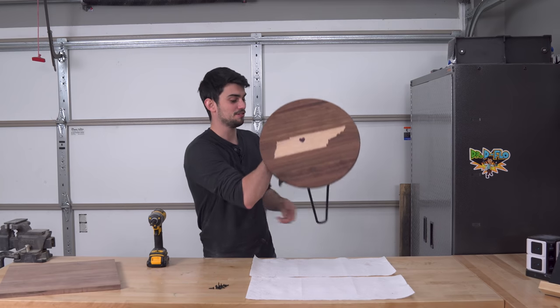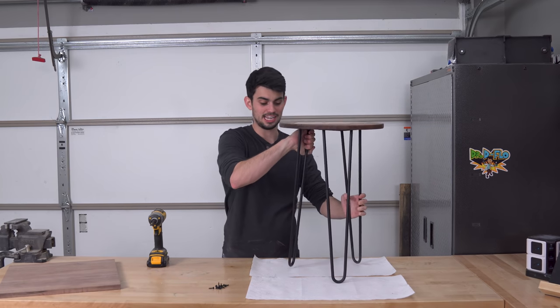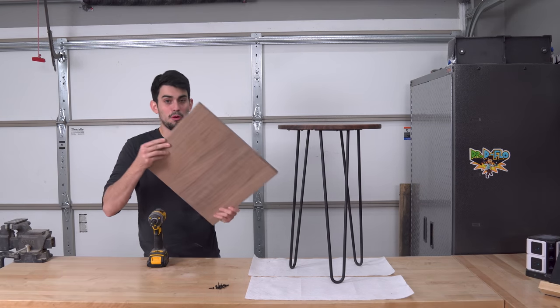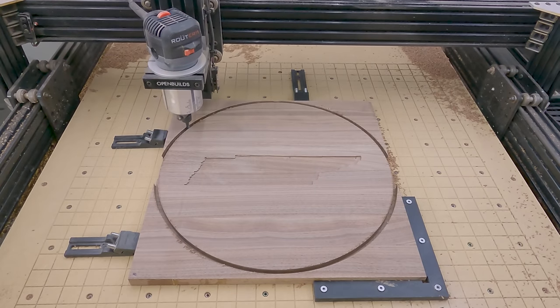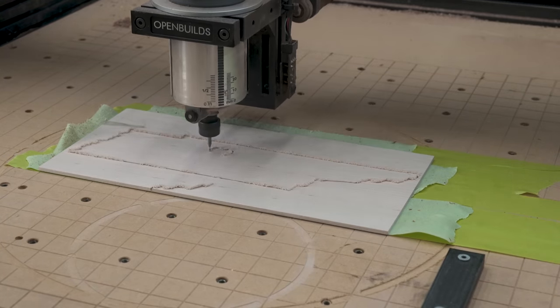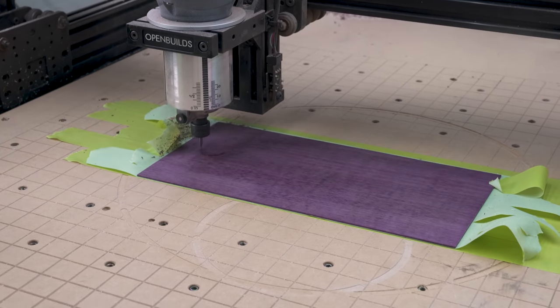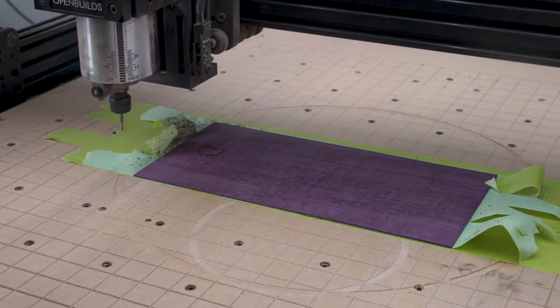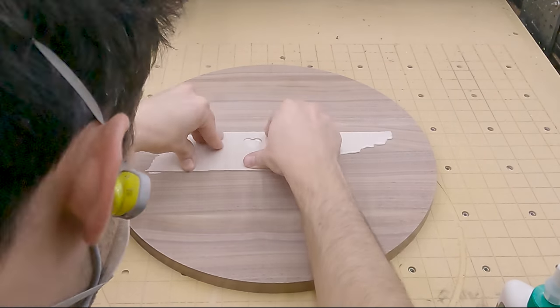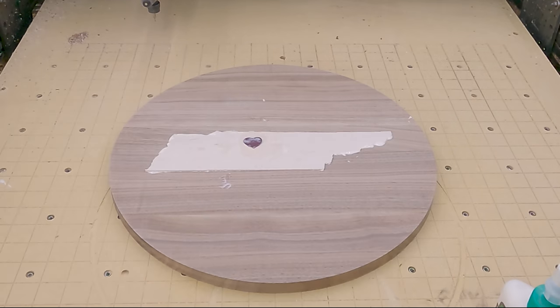Now obviously for this table, I went with a circular design. So I took my original walnut board and carved a circle into it. I then made a pocket for a Tennessee inlay. Now this design is technically an inlay within an inlay because the heart is made out of African purple heart. I think it turned out great, but really inlays are awesome to add a personal touch to any project.